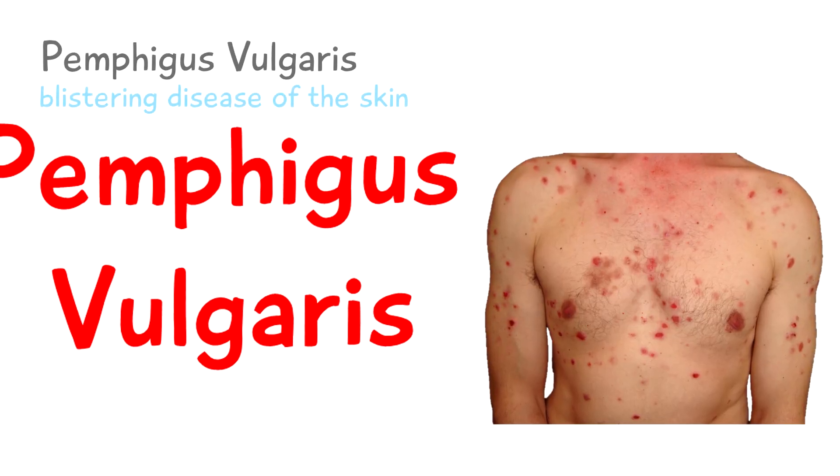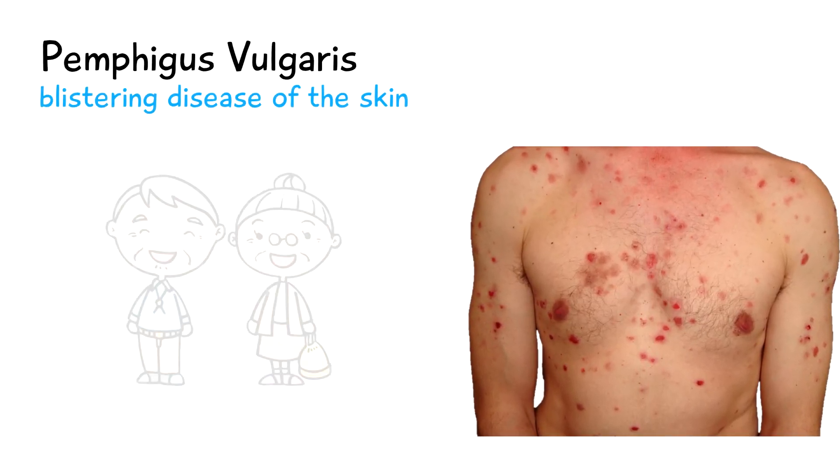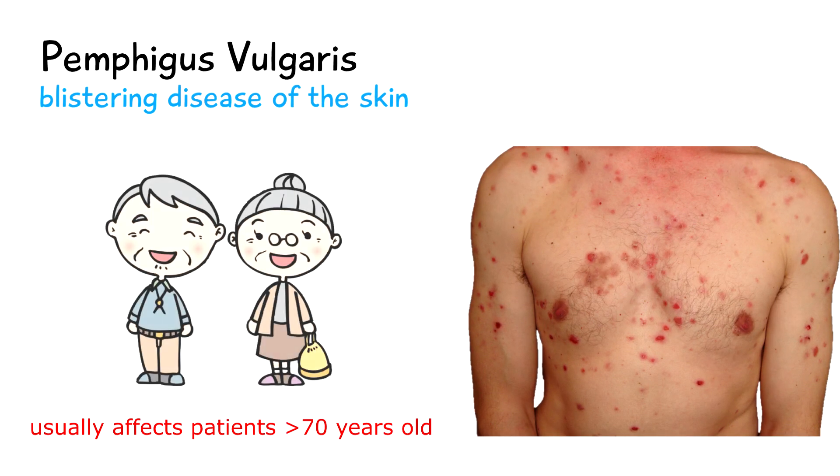In today's video we're going to be talking about pemphigus vulgaris. This is a blistering disease of the skin and mucous membranes and it usually affects patients in their 70s.